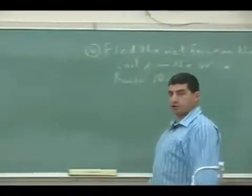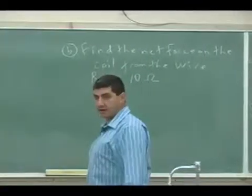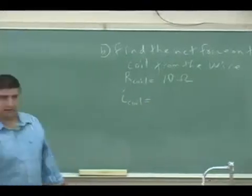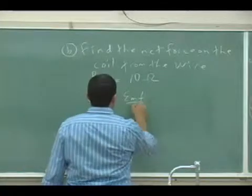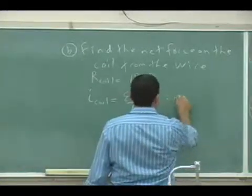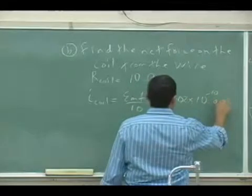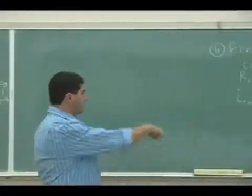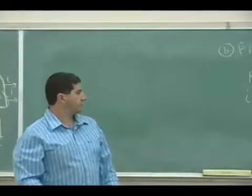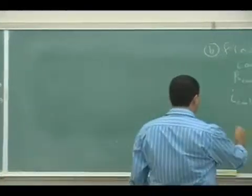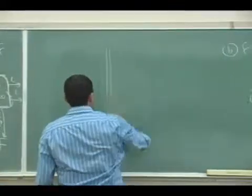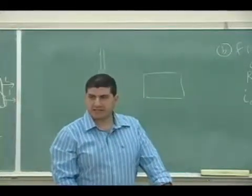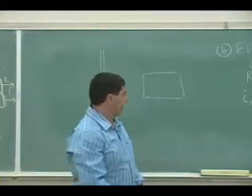Okay, so part B, you could ask, find the net force on the coil from the wire. So we can find the current in the coil. The current is just the EMF induced divided by 10. So that means that's the current that's flowing through the coil. 3.02 times 10 to the minus 10 amps. And what is it gonna be? If it's positive, it's gonna be counterclockwise is winning, huh? So it's gonna be counterclockwise.